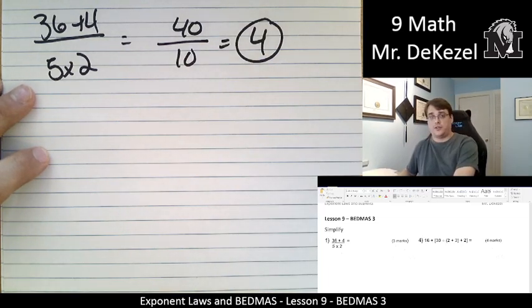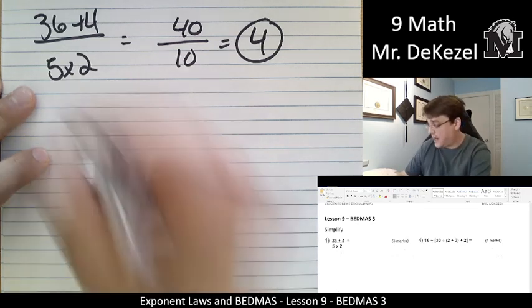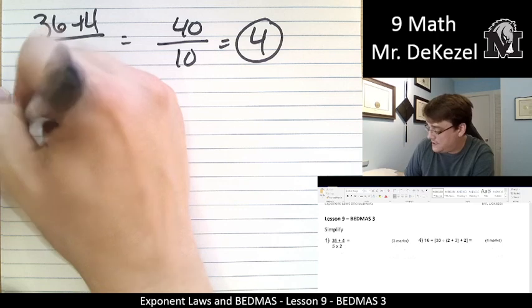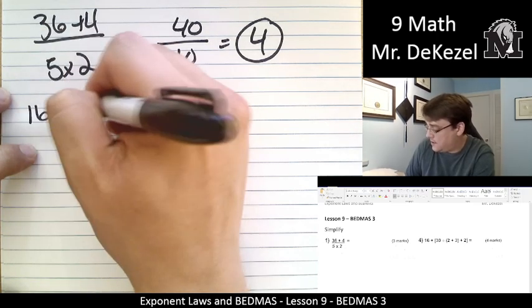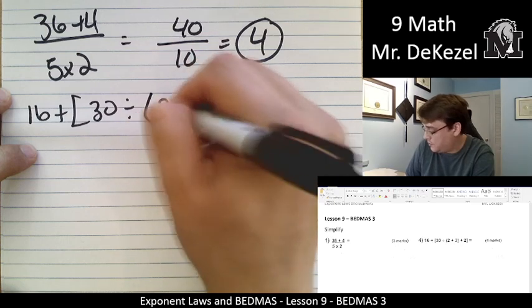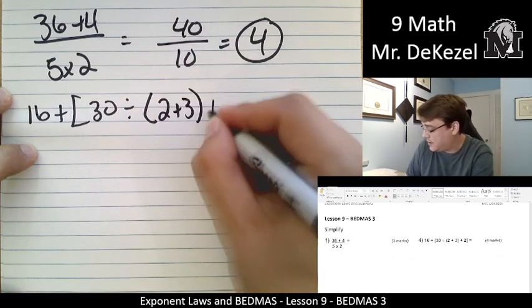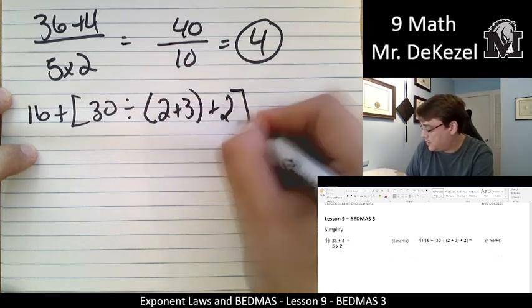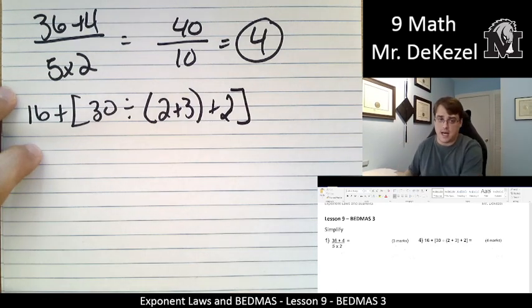Let's shift over to the right and we'll do one that's a little bit harder and has two sets of brackets in it. So we have 16 plus big bracket 30 divided by a little bracket 2 plus 3 with a closed little bracket plus 2 in a closed big bracket. So let's just do this one step at a time.